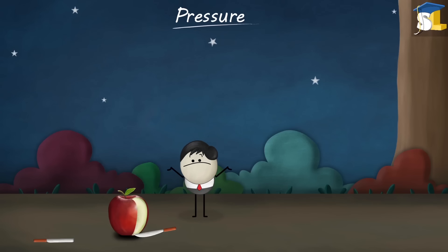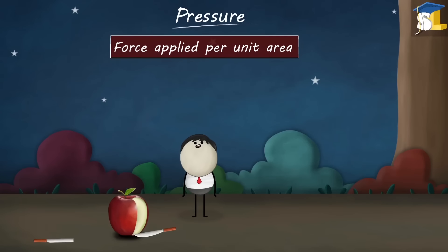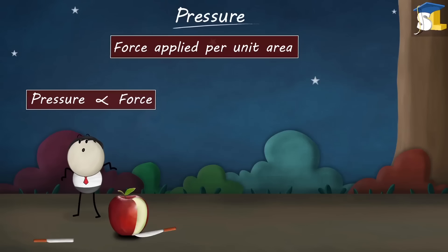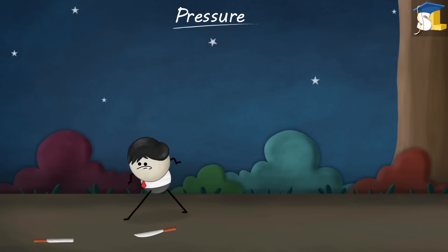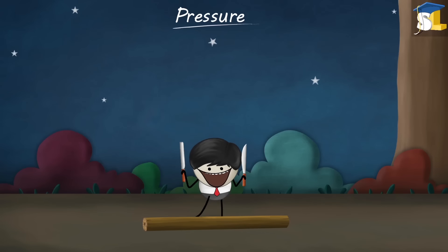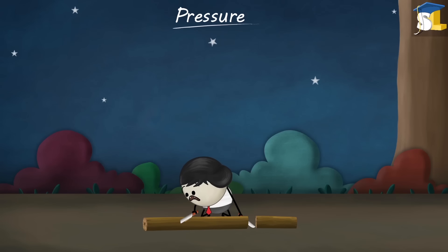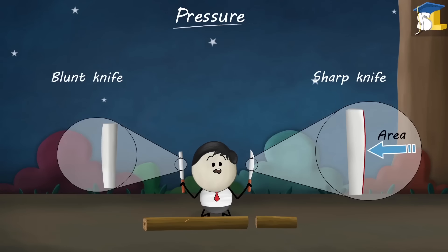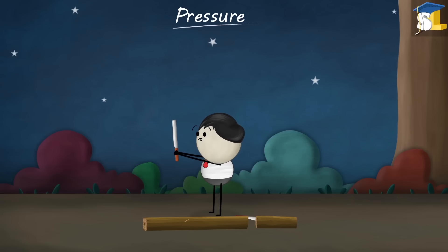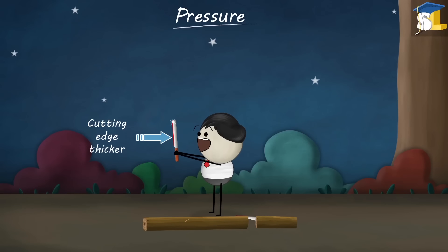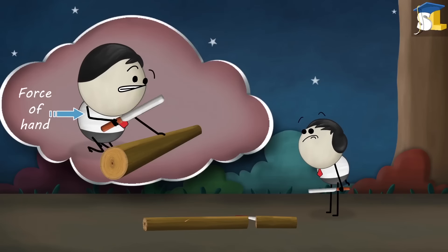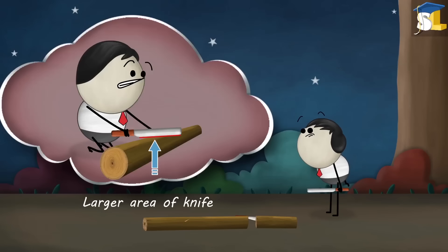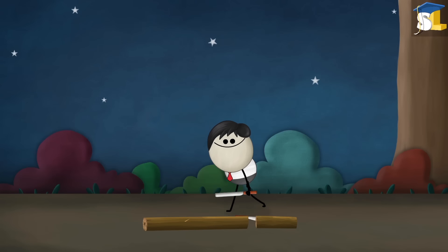What is pressure? It is the force applied per unit area. That means pressure is directly proportional to force and inversely proportional to area. We apply the same amount of force on both knives, but the result was different because the area on which the force acted was different. In the case of a blunt knife, the cutting edge is thicker, meaning the area is larger. As a result, the force falls over a larger area, producing less pressure. Hence, it is difficult to cut with a blunt knife.